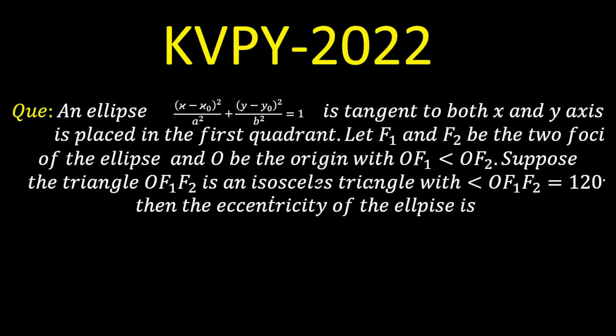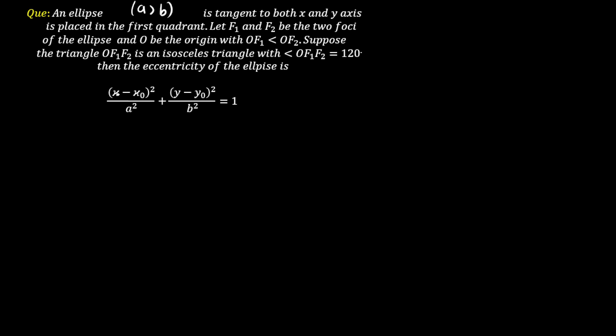Today we're going to solve a question from ellipse. The question gives an ellipse in the form of (x minus x0)² / a² + (y minus y0)² / b² = 1. From this we can conclude that the major and minor axes are parallel to the x-axis because this is a shifted ellipse, and one more thing is given: a is greater than b, meaning it is flattened on the x-axis.